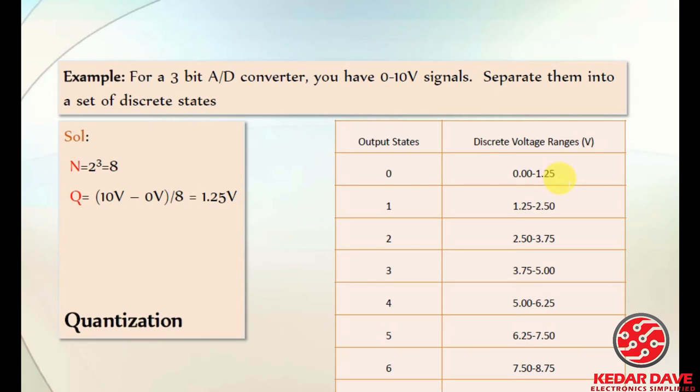If the value lies between 0 and 1.25 volts, it will represent the zero state. If it is between 1.25 and 2.50 volts, it is in the 1 output state. This is how the quantization process works — it is very easy to understand and is the best method to understand analog to digital conversion.